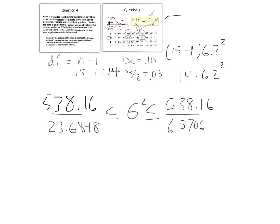So now, if we calculate those values, our lower limit, you divide 538.16 by 23.6848, and you get something like 22.7217 less than or equal to sigma squared, or the variance, less than or equal to. And then we divide 538.16 by 6.5706, we get 81.9042.